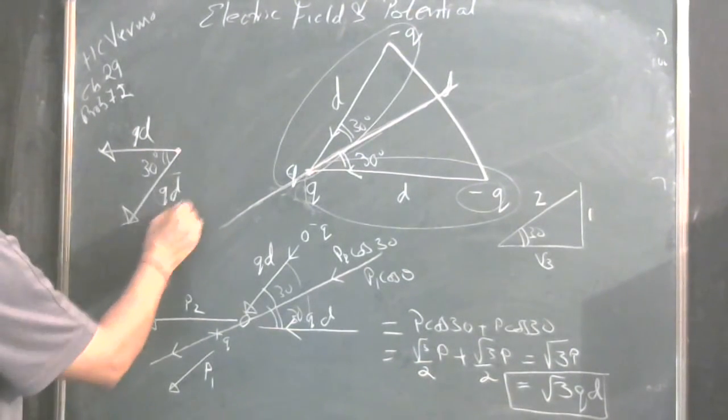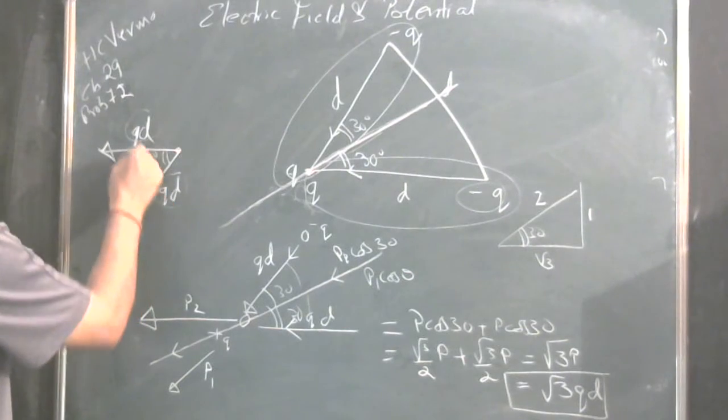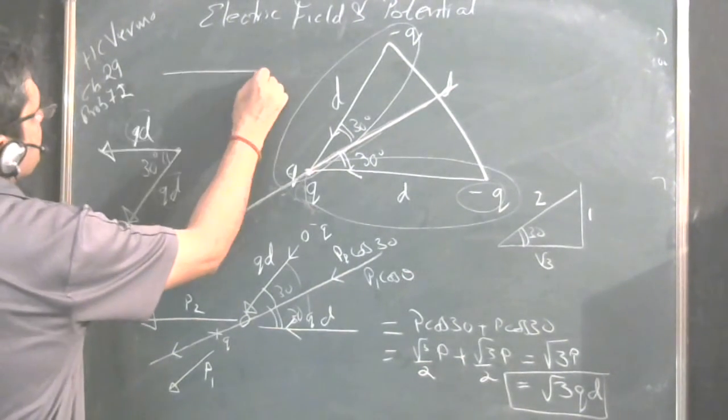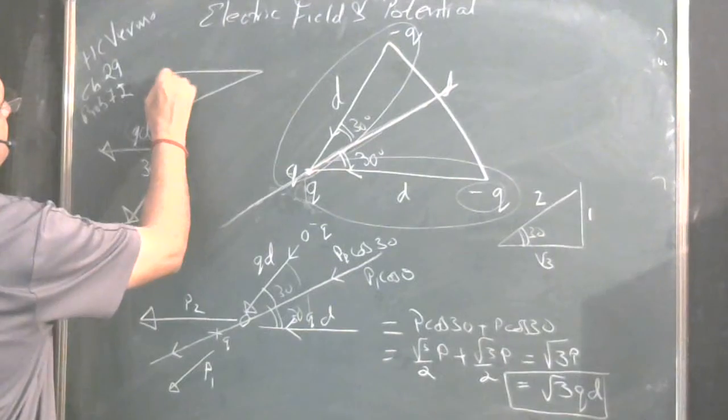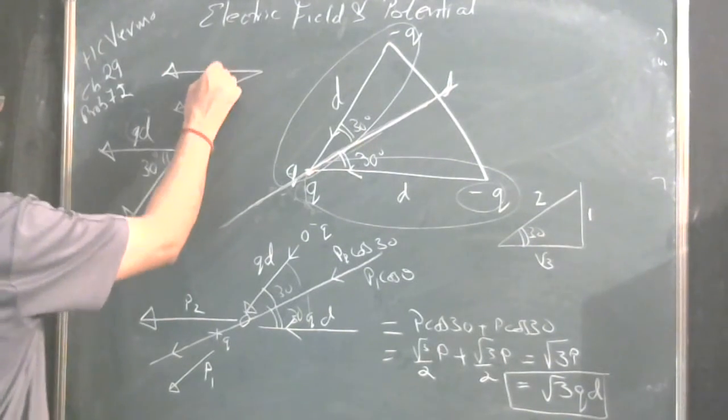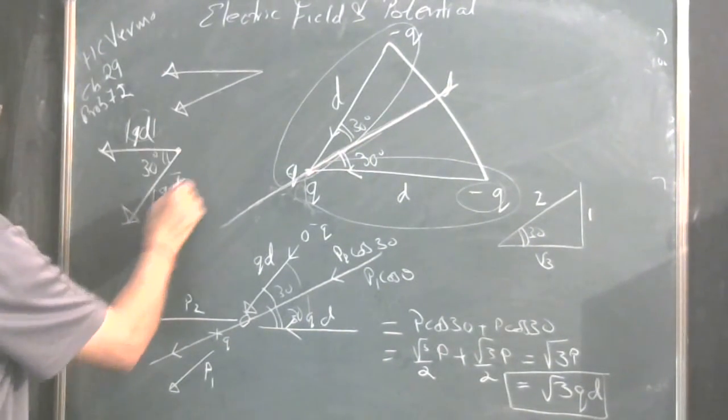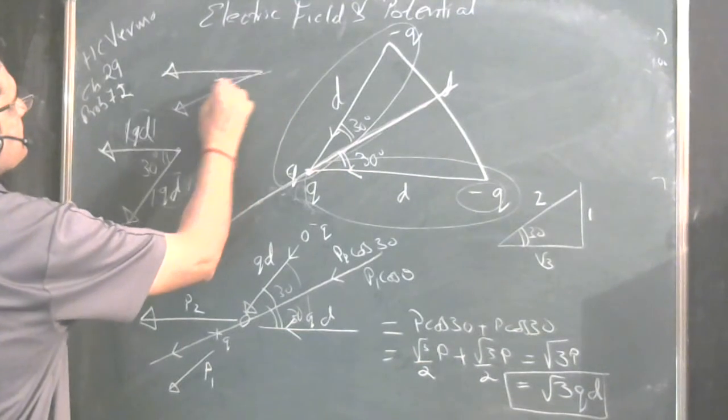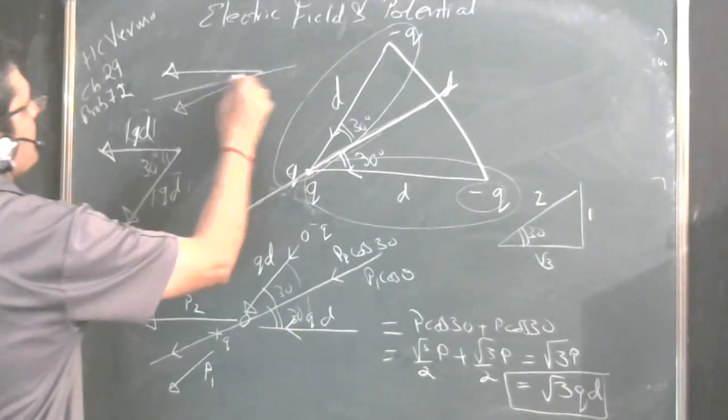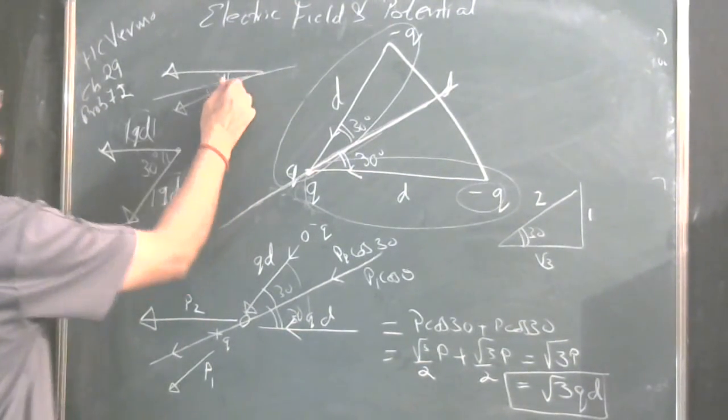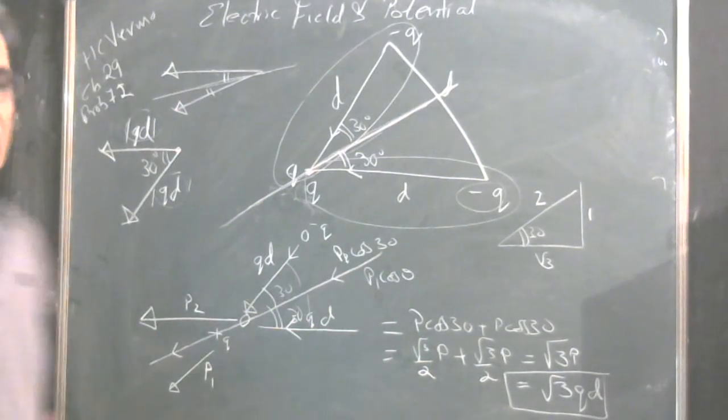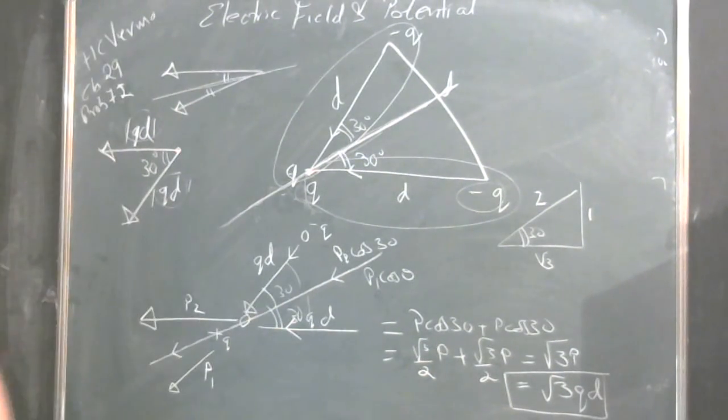But in such cases it is more easier when you have two equal vectors and they are making certain angle between them. There are two equal vectors in terms of the magnitude. Always take their bisector and take their half angle projection. Add them straight away and you get the answer. Thank you.